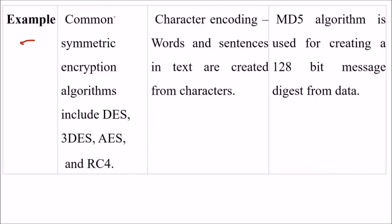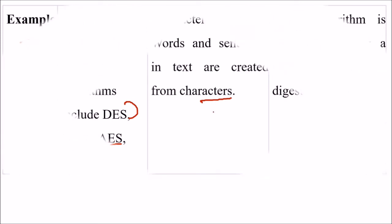As examples: common symmetric encryption algorithms include DES, 3DES, AES, and RC4. For encoding, character encoding is used where words and sentences in text are created from characters. For hashing, the MD5 hash is used for creating a 128-bit message digest.